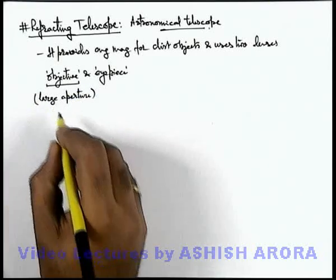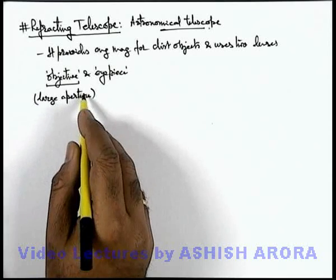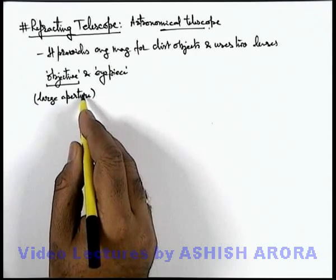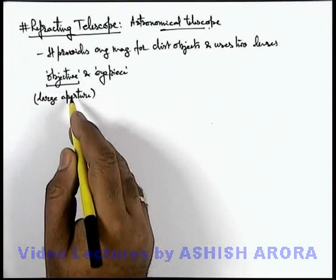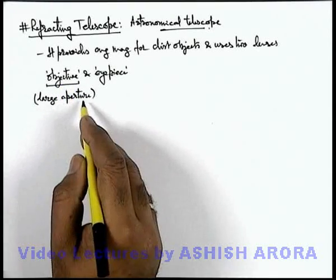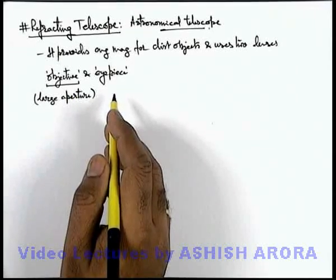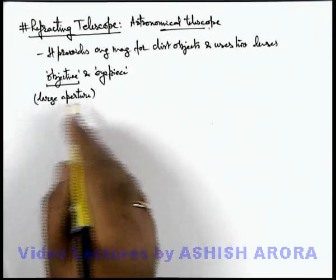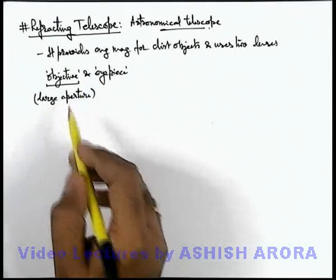This is because as the object is located far away, the intensity of light rays coming from the object reduces to a very low value. So objective is taken to be of large aperture so that as many light rays enter into the objective, the image intensity will be high. And as the object is far away, all rays can be considered as paraxial, so relative spherical aberration will be less.